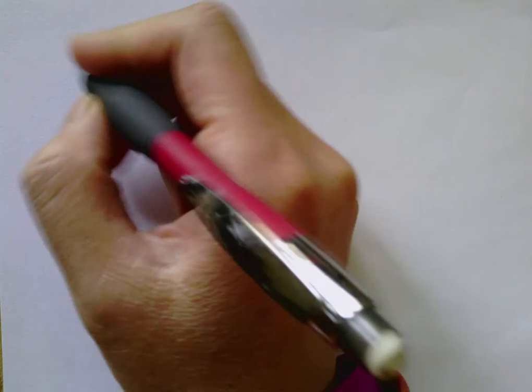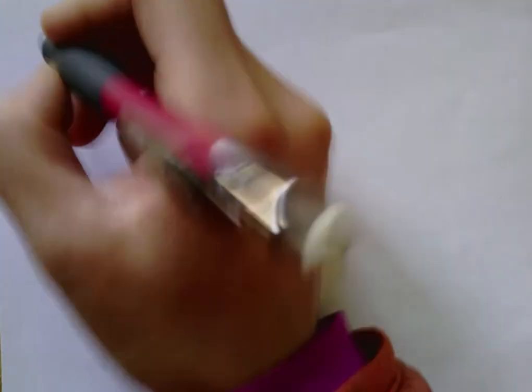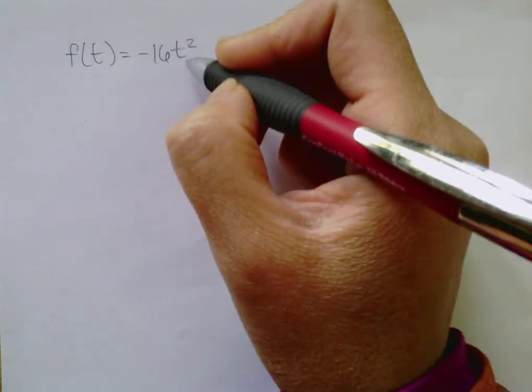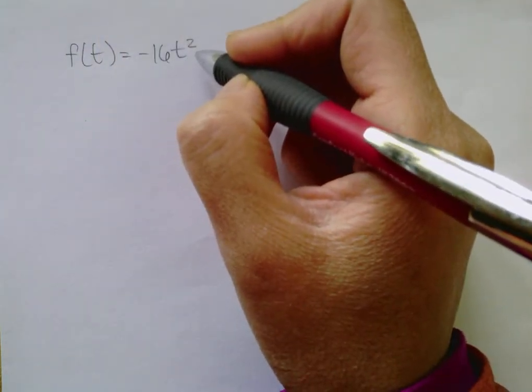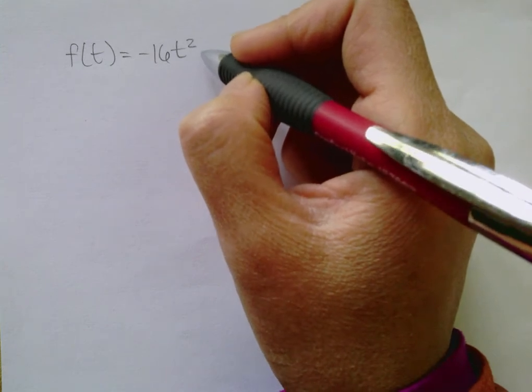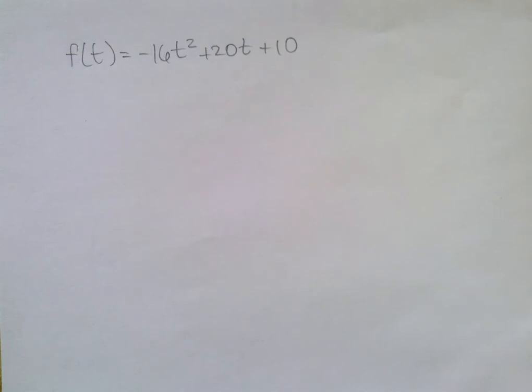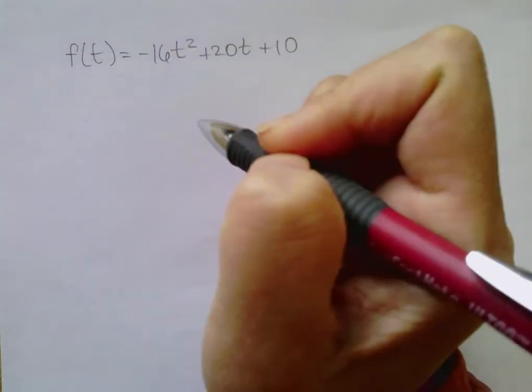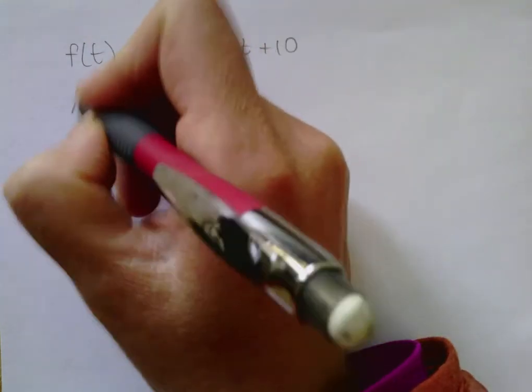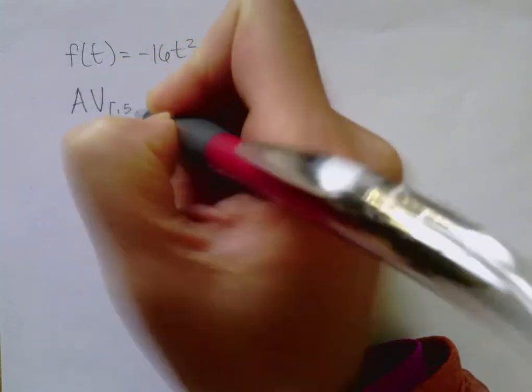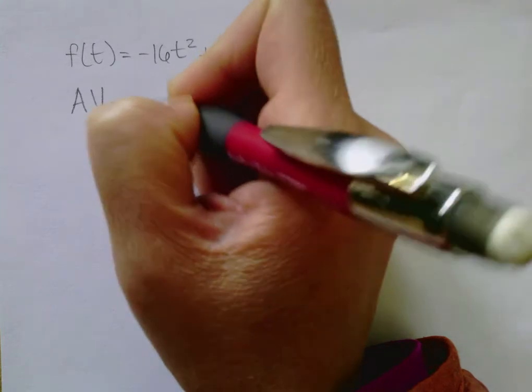Now let's look at another example using the same function. So remember we're looking at this having units of feet per minute, and that's our function. And we're looking at a different time interval now. Let's look at the time interval between half a minute and a minute.